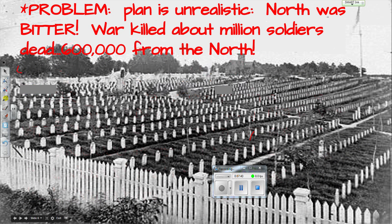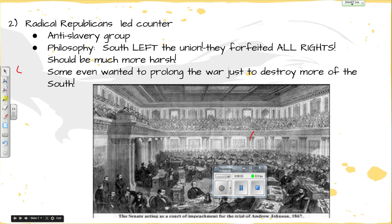The 10% Plan was very unrealistic because the North was bitter. The war had killed about a million soldiers — 600,000 from the North alone. They didn't think 10% loyalty was tough enough. The radicals had control in Congress and led a counter-proposal to Lincoln's plan. Their philosophy: the South left the Union, therefore they forfeit all their rights. Some even proposed keeping the war going longer just to kill more Southerners — extreme radicals.